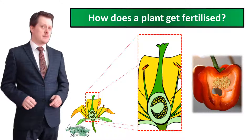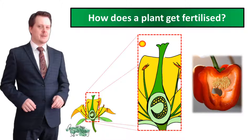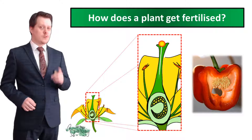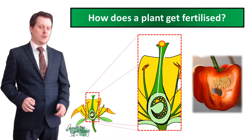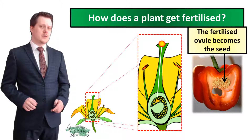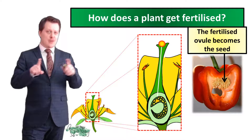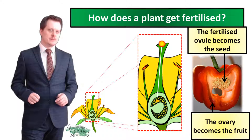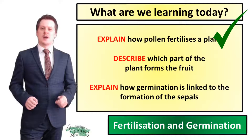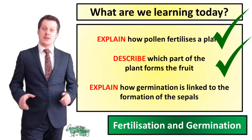We haven't yet explained how pollination results in the formation of a fruit. When the pollen grain lands on the stigma and the pollen tube forms down to the ovary, the nucleus from the pollen fertilizes an ovule. This fertilized ovule becomes the seed. The ovules in the original plant are surrounded by an ovary, and it's this ovary which becomes the fruit. So now we've described the structure and function of the seed and which part of the plant becomes the fruit.